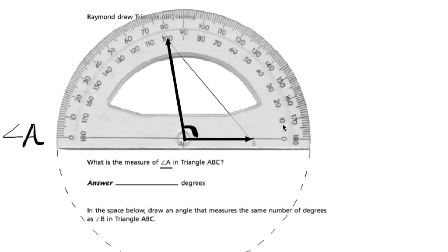So we use this inner track of numbers on this protractor because if you follow the numbers, it goes 0, 10, 20, 30, 40, counting up. In other words, the angle is getting larger as we open up this way. If the angle is starting on the other side, we would use the other track of numbers.